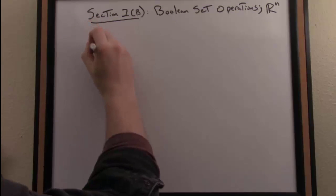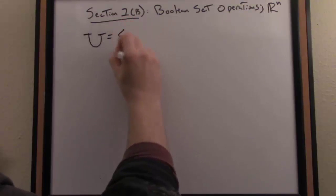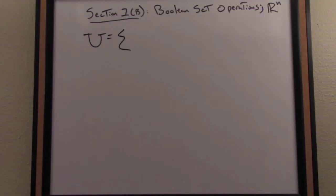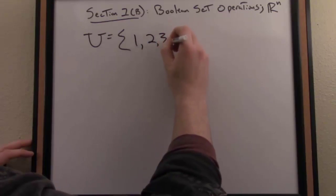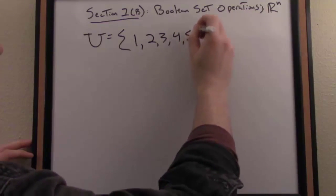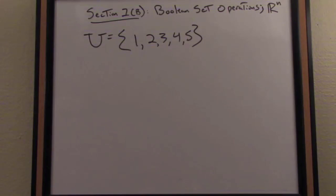When we discuss sets, we want to frame those sets in a kind of universe of sets as I referred to previously. So we'll call our universe here U. We're going to use set notation. And just to make things nice and elementary, we'll say that our universe consists of the numbers 1, 2, 3, 4, and 5.